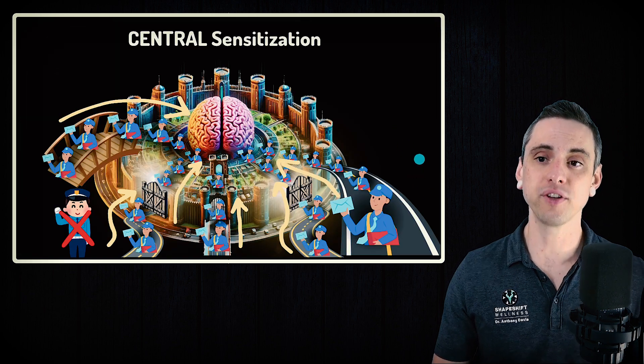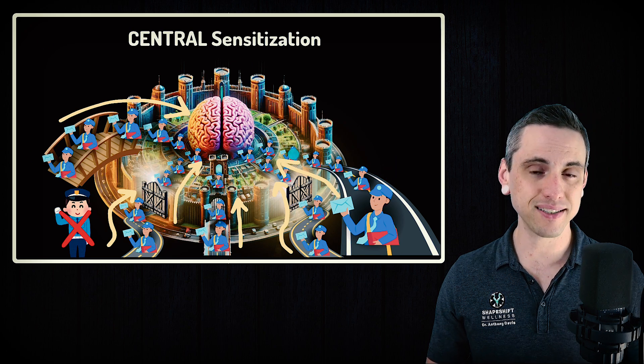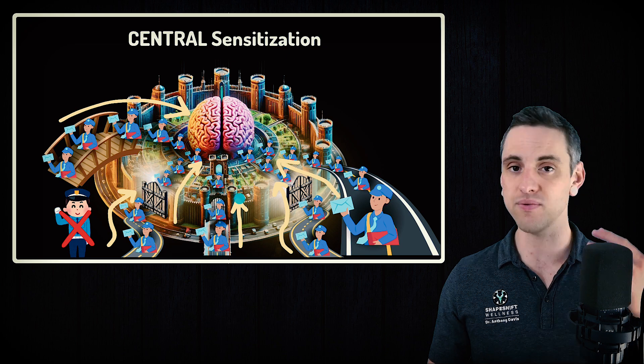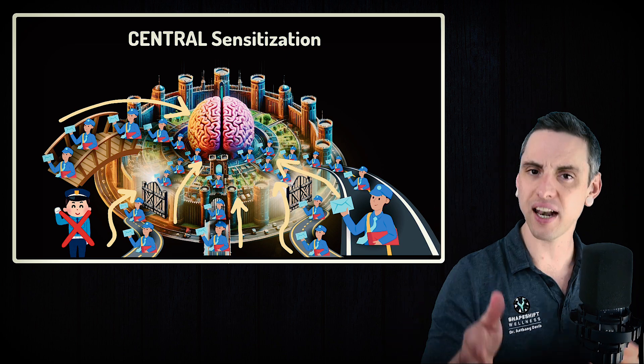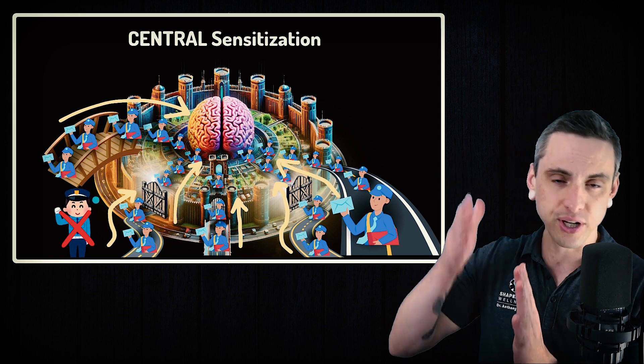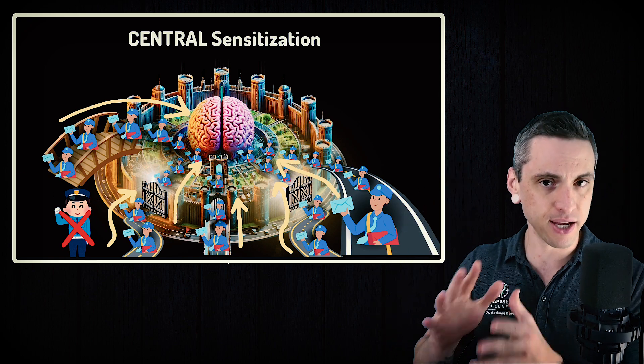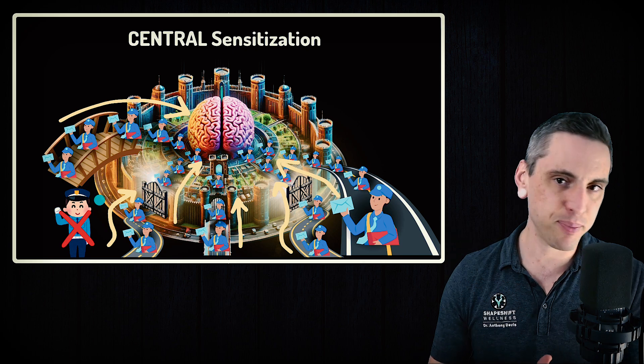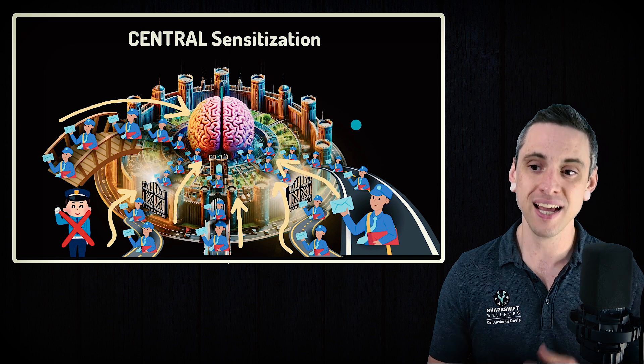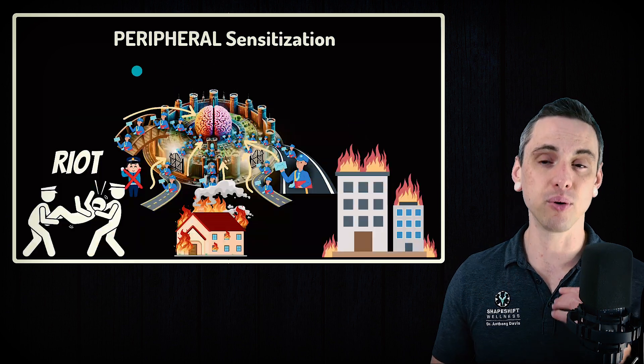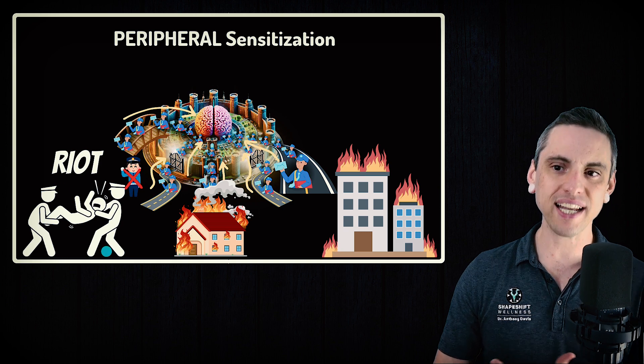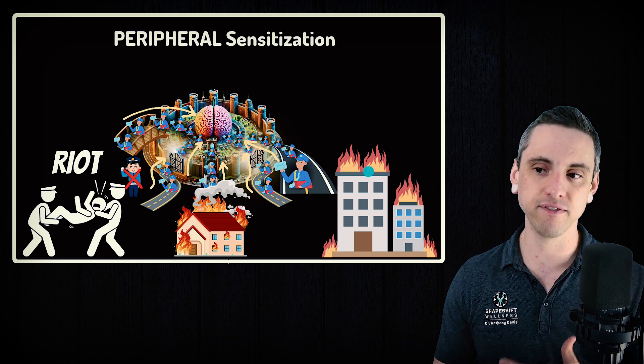Now, so far in this series, we've talked about a lot of things, including central sensitization, where the gates and the roads that go to the brain are just wide open. We're getting a lot of signals passing through that should not be passing through, where we should have security guards stopping and frisking and making sure that only certain people get through. Instead, everybody's getting through. And so everything is really sensitive. The brain is getting bombarded with messages. Today, we covered peripheral sensitization, which is where outside of the city walls, there's rioting in the streets, houses are on fire, there's tons of inflammation.